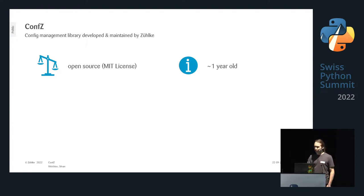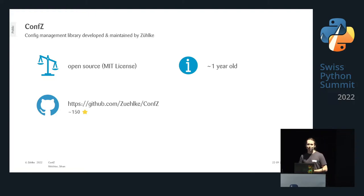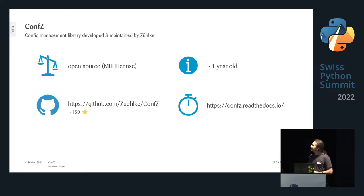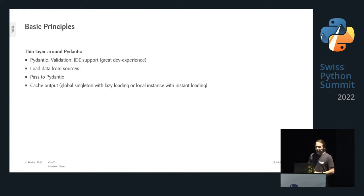Conf-set is a configuration management library we developed at Zylke and it's open source under the MIT license. We developed it about a year ago and continuously improve it. It's on GitHub — the world hasn't exactly been waiting for this library, but it's not completely unpopular either. There's documentation on Read the Docs and you can install it with pip or conda.